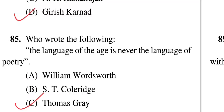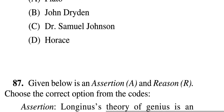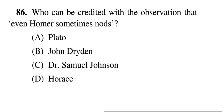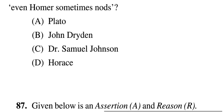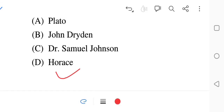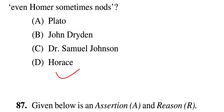Question 86: Who can be credited with the observation that 'even Homer sometimes nods'? Homer is known for his epic works. Options: A — Plato, B — John Dryden, C — Dr. Samuel Johnson, D — Horace. The correct answer is D — Horace, who is also a well-known and celebrated figure.